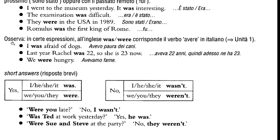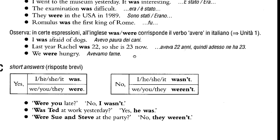There is also a note: in certain expressions in English, 'was/were' corresponds to the verb 'avere' in Italian. For example, 'I was afraid of dogs' is like saying 'avevo paura dei cani'. And 'last year Rachel was 22, so she is 23 now' — 'aveva 22 anni, quindi adesso è 23' — you have to think of the sentence as 'last year Rachel was 22 years old'. Also, 'we were hungry' — 'avevamo fame, eravamo affamati'.